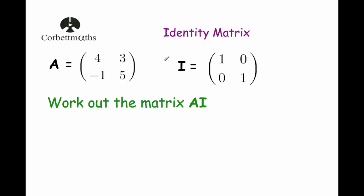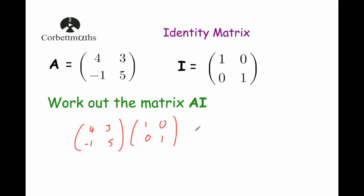Let's look at multiplying the identity matrix by a matrix. So we've got A which is equal to [[4, 3], [-1, 5]], and we've got the identity matrix [[1, 0], [0, 1]]. Let's multiply these two matrices together. If you need to recap multiplying 2 by 2 matrices together, I highly recommend watching the ScorpioMath's video on it — it's fantastic and it'll help you understand how to multiply those matrices together.